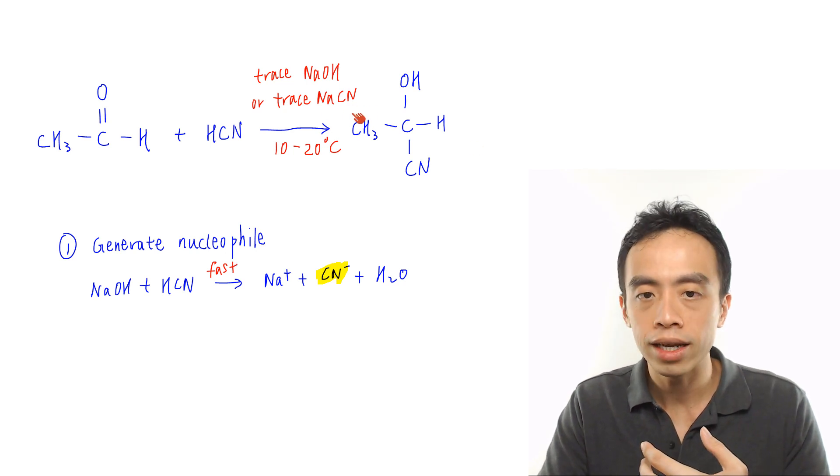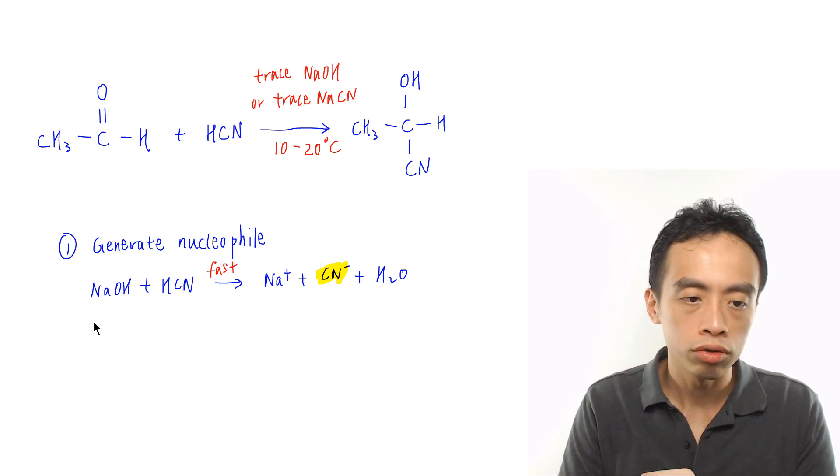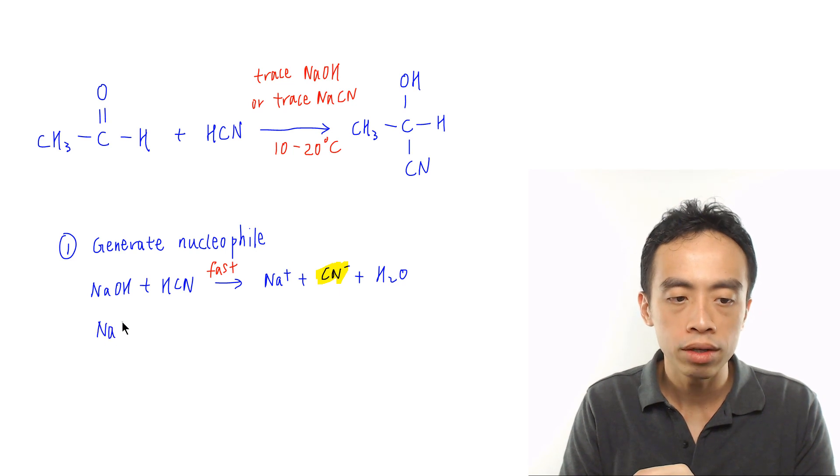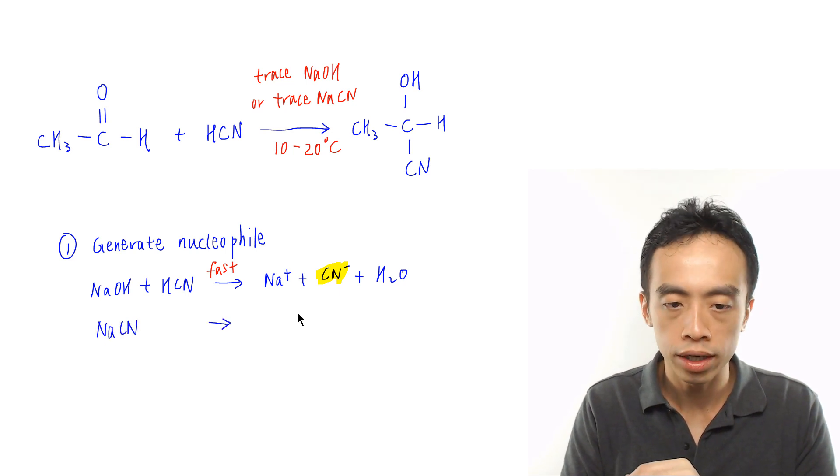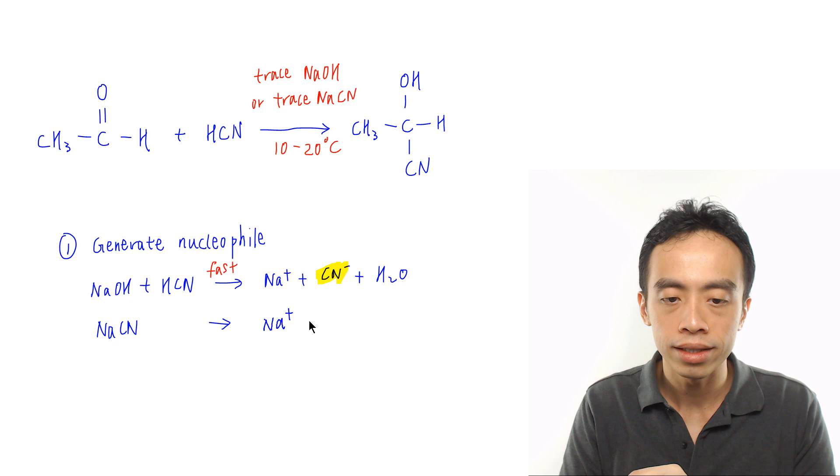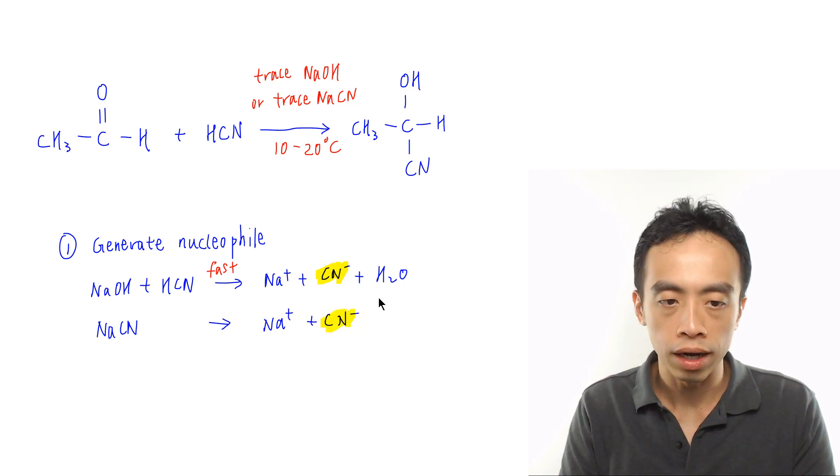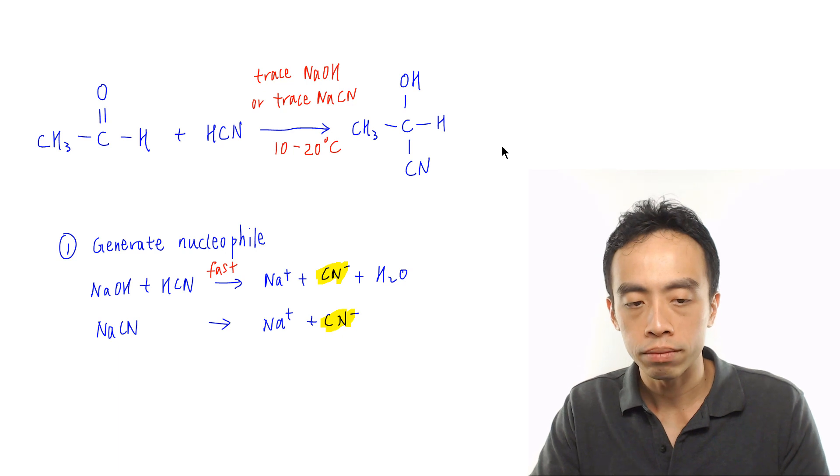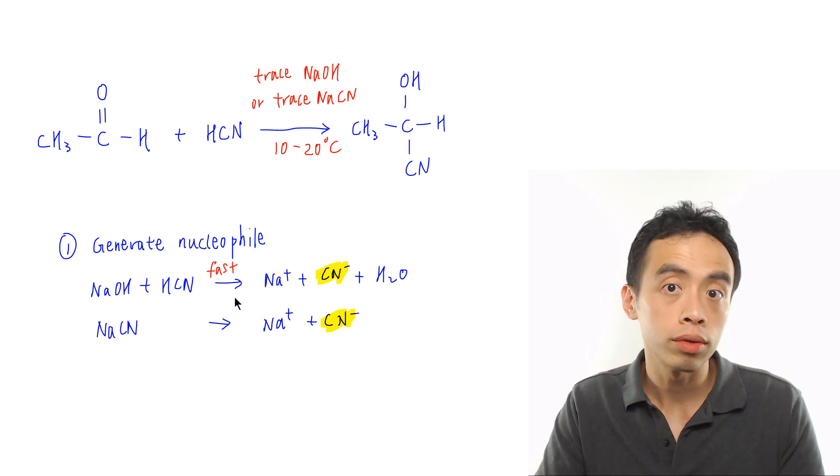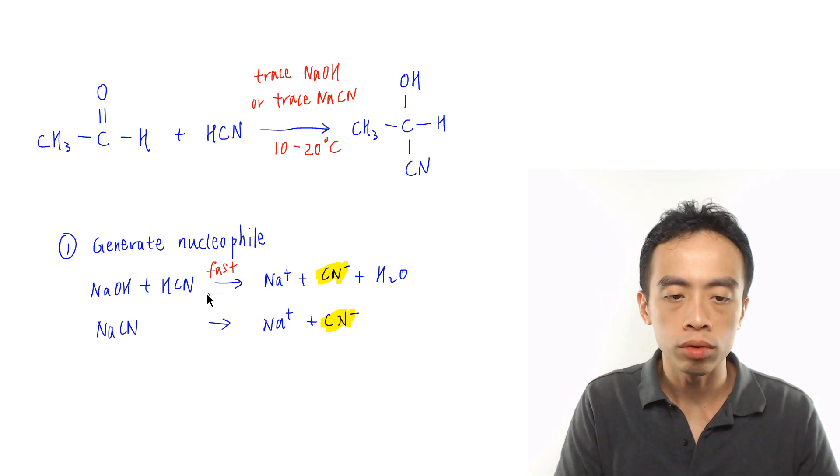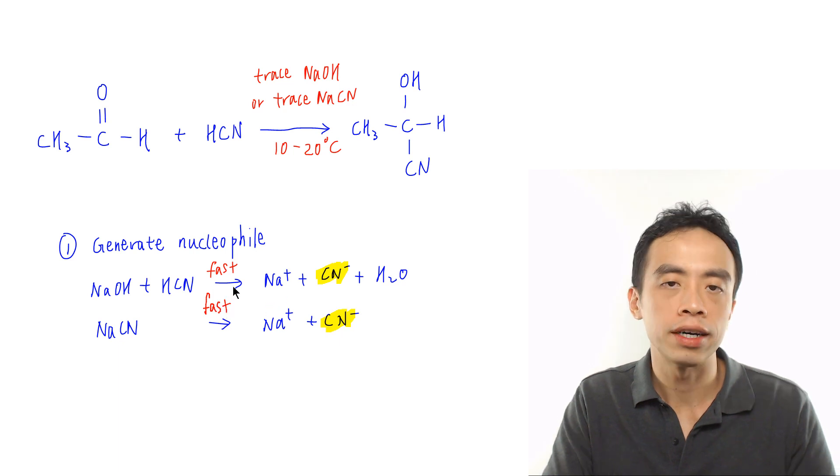If we are using trace NaCN, then it is more straightforward. Trace NaCN will dissociate to give us Na⁺ and CN⁻, so the nucleophile is generated. Because this step is just the dissociation of NaCN, this step would also be the first step.